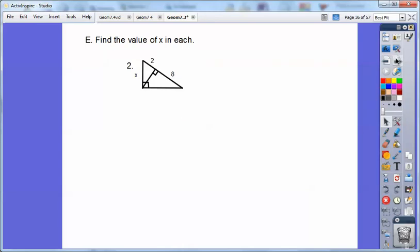Let's try another. Here's a leg. This time the leg is a geometric mean. Bottom left, top right. Between the projection, which is that 2, and the whole hypotenuse. Do you see where I got 10? 2 plus 8 is 10.